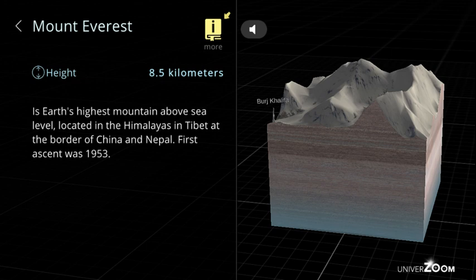Mount Everest, height: 8.5 kilometers. Is Earth's highest mountain above sea level located in the Himalayas in Tibet at the border of China and Nepal. First ascent was 1953.